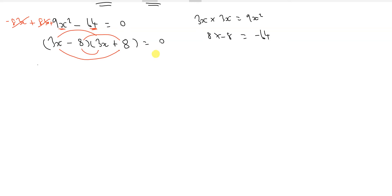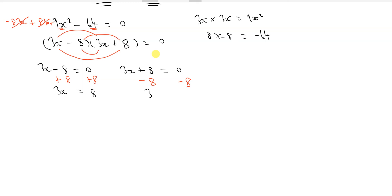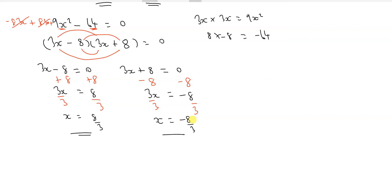Now we solve for x. We have 3x minus 8 equals 0 and 3x plus 8 equals 0. Adding 8 to both sides of the first gives 3x equals 8, and dividing by 3 gives x equals 8 over 3. Subtracting 8 from both sides of the second gives 3x equals minus 8, so x equals minus 8 over 3.